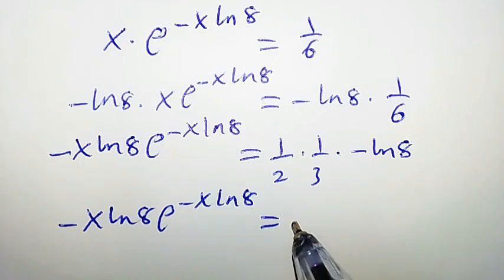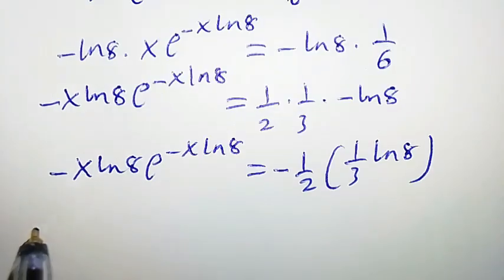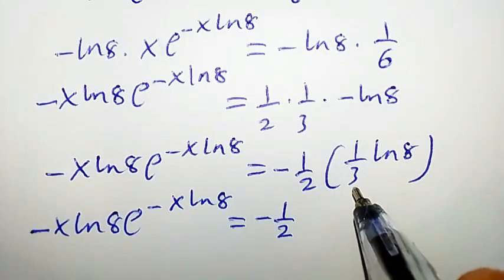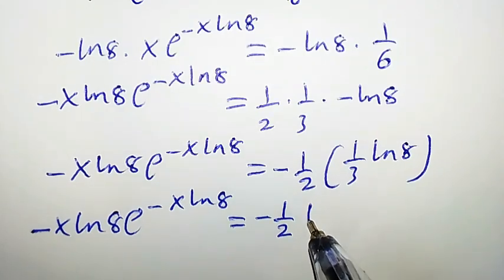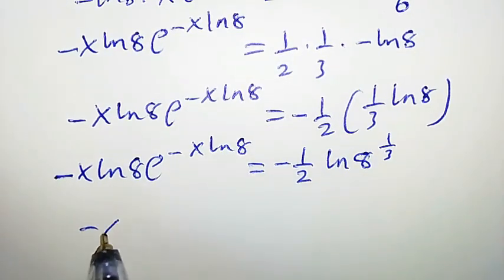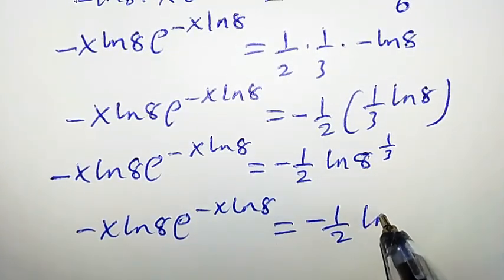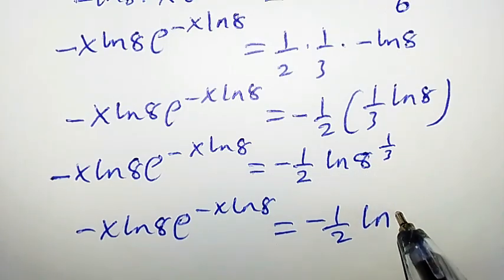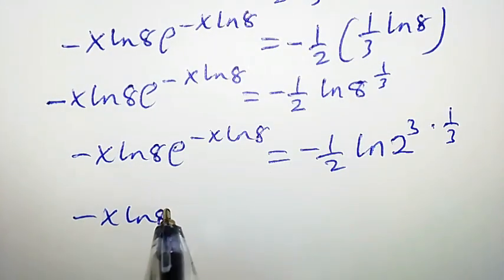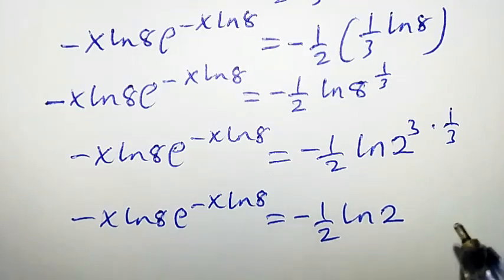We can write 1 over 6 as 1 over 2 times 1 over 3, and ln 8 as ln 2 to the power of 3, so the right-hand side becomes negative 1 over 2 times 3 ln 2 over 3, which simplifies to negative 1 over 2 times ln 2, since the 3s cancel.